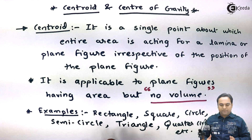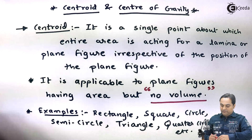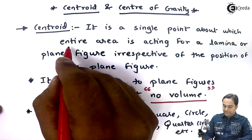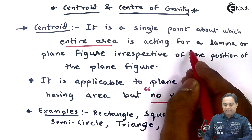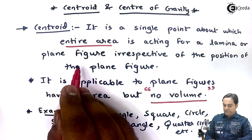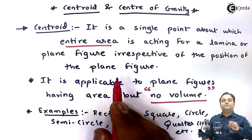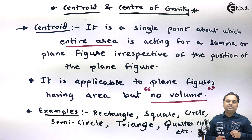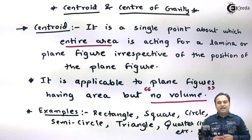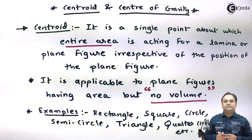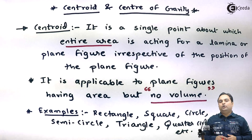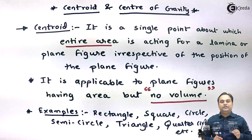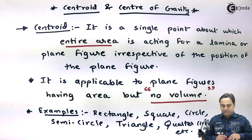From this it is very much clear about the Centroid. The definition states it is a single point about which the entire area is acting for a lamina or plane figure, irrespective of the position. Irrespective of the position means even if you go on changing the orientation — for example, if there is a triangle with the apex at the top, even if the apex is at the bottom, the Centroid will not change. It is a point which remains constant.